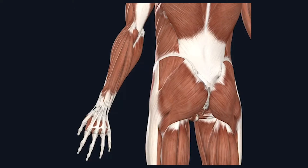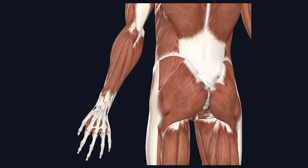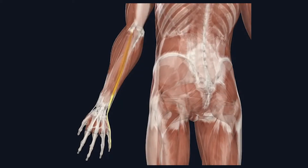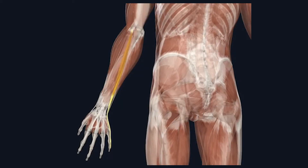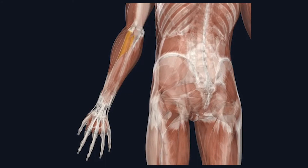These muscles include the wrist extensors — extensor carpi radialis brevis and extensor carpi ulnaris — the finger extensors — extensor digitorum and extensor digiti minimi — and the supinator muscle.